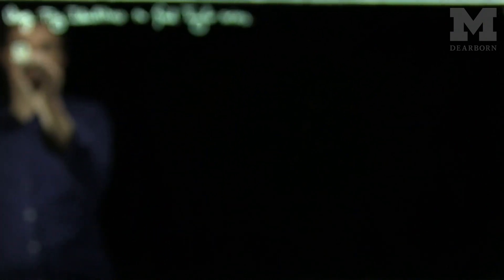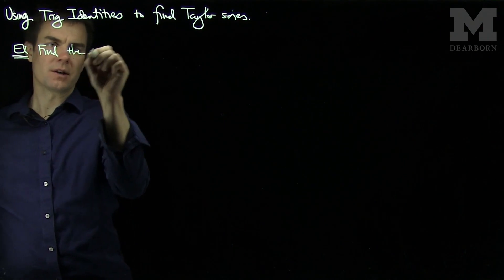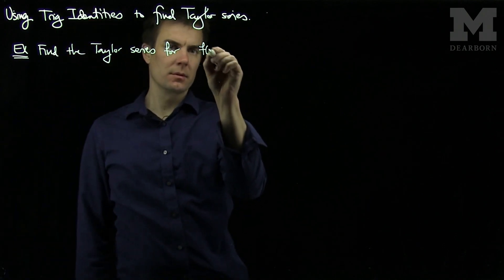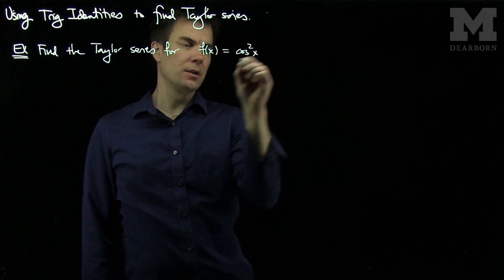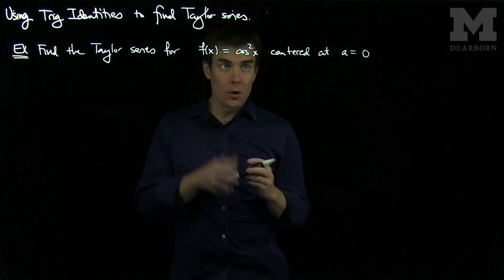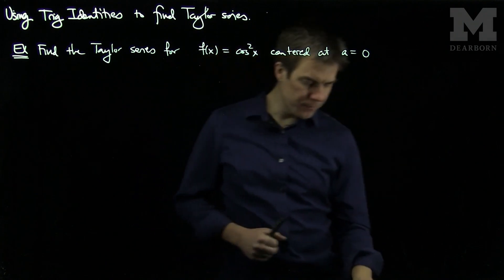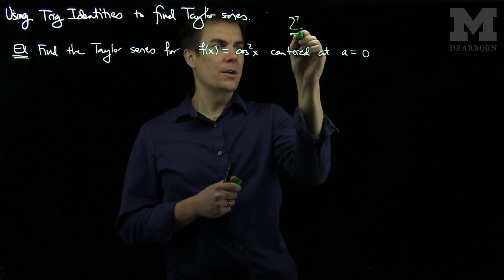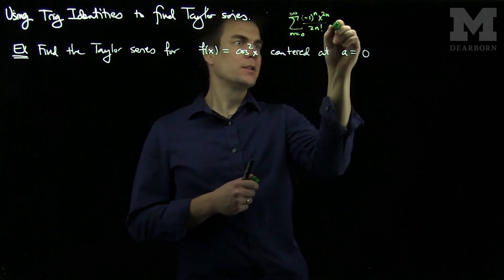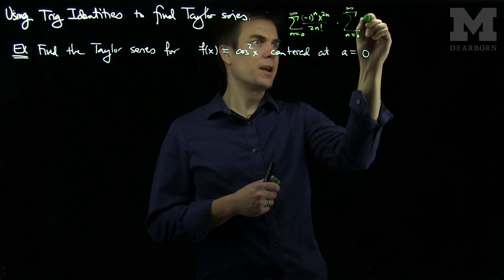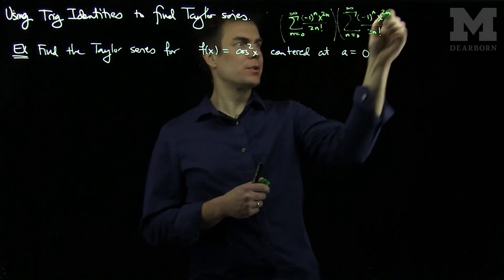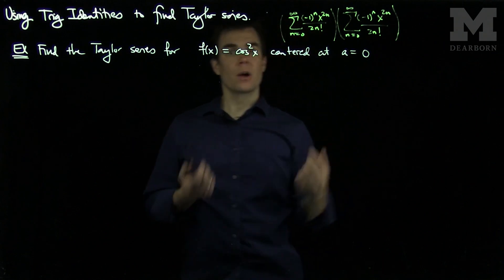Here's the first example. Let's find the Taylor series for f(x) = cos²(x) centered at a = 0. One thing we could do is write this as the sum n=0 to infinity of (-1)^n x^(2n) / (2n)! times the same sum, and multiply out each term. But that's a tremendous amount of work and involves lots of pattern recognition.